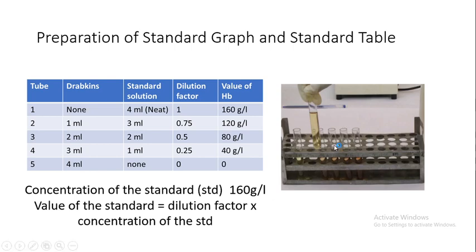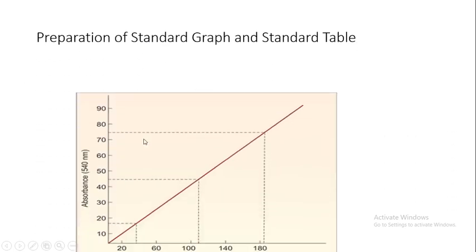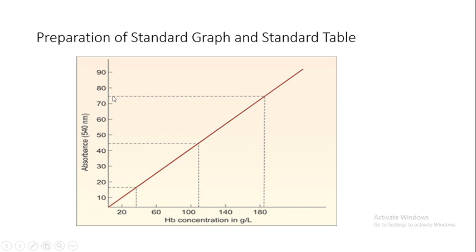Take the absorbance at 540 nanometers of the solutions prepared according to the table against the blank of Drabkin's solution. Using linear graph paper, plot the absorbance values on the vertical axis and the hemoglobin values on the horizontal axis. The points should be a straight line that passes through zero.